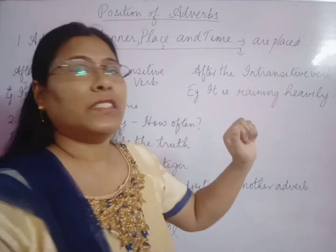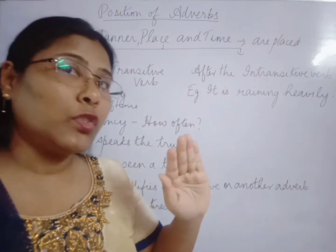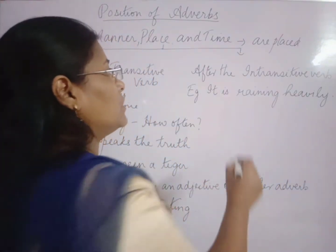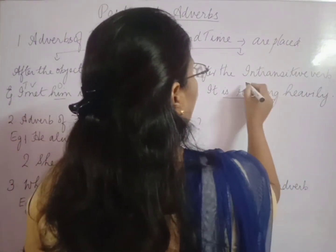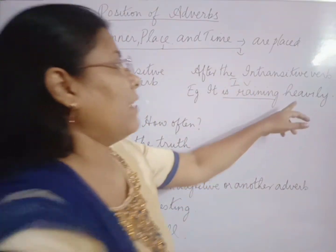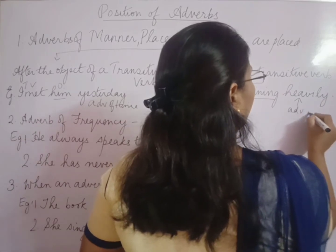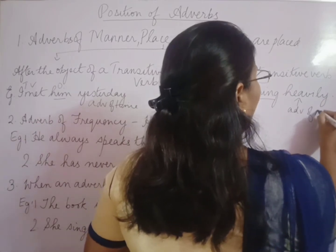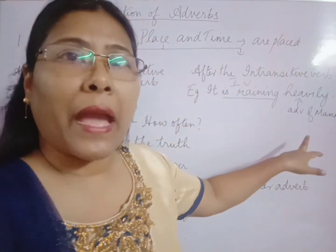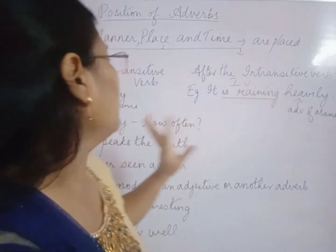Now, what are intransitive verbs? Intransitive verbs do not require an object to complete their meaning. For example: 'It is raining heavily.' Here 'is raining' is the intransitive verb and 'heavily' is the adverb of manner. So you see the adverb of manner is placed after the intransitive verb.